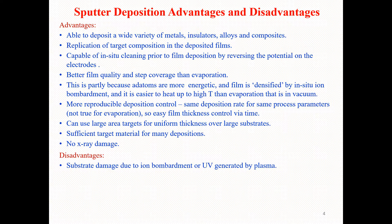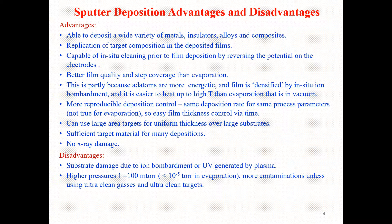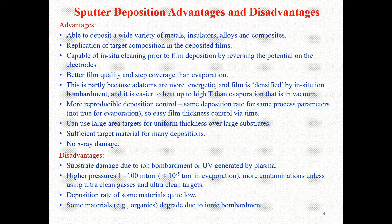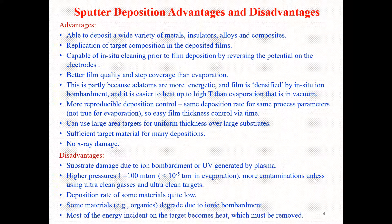Disadvantages include: substrate damage due to ion bombardment or ultraviolet radiation generated by plasma; higher pressure in the range of one to 100 millitorr, though this is much smaller than 10 to the minus 5 torr used in evaporation; more contamination, though this can be overcome by using ultra-clean gases and ultra-clean targets; deposition rate of some materials is quite low; some materials like organics degrade due to ion bombardment; and most of the energy incident on the target becomes heat which must be removed. That's all for this lecture. Thanks for watching, see you next lecture.